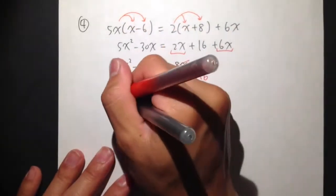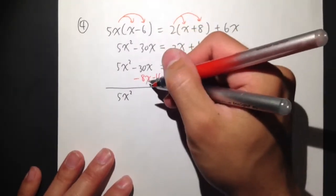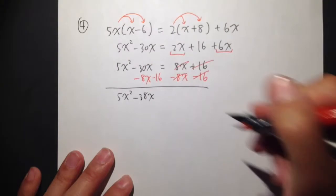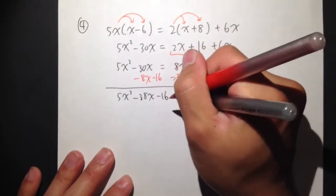Okay, so I have 5x squared, negative 30x minus 8x is negative 38x. And then I have the negative 16, it's equal to 0.